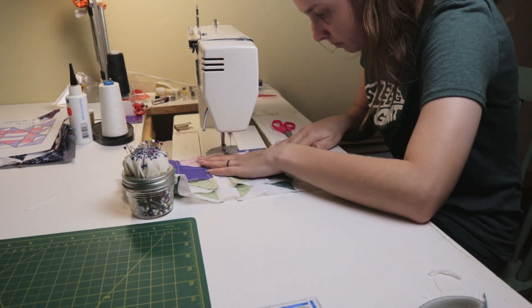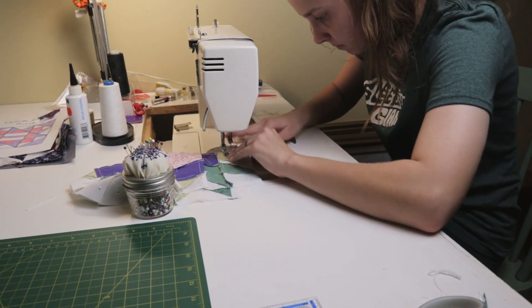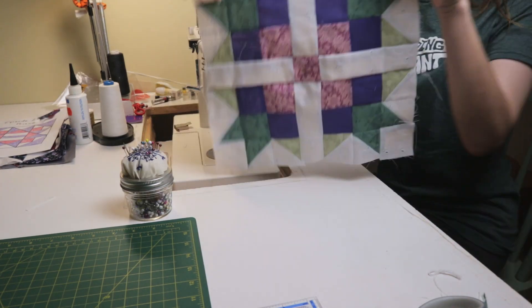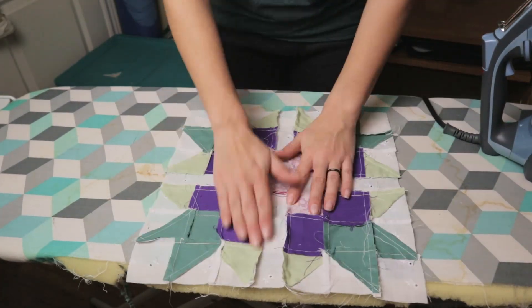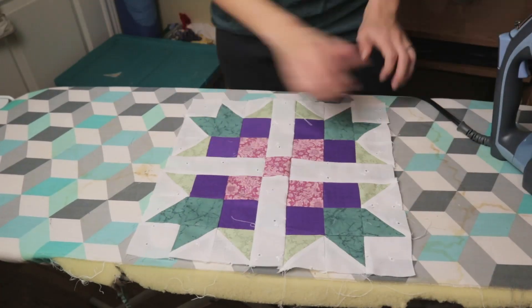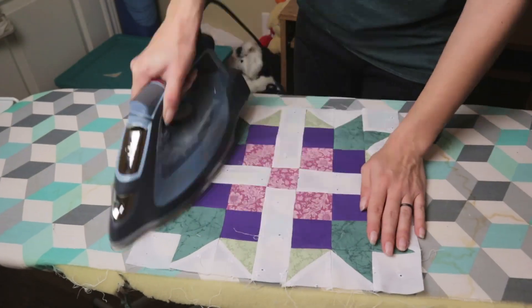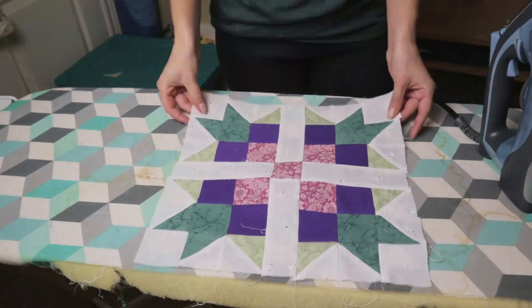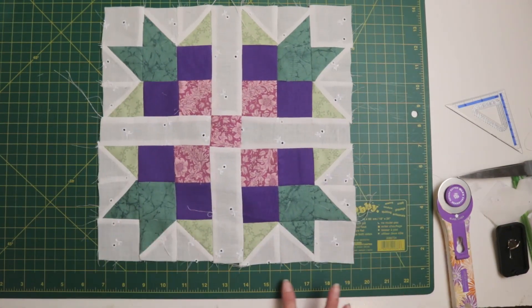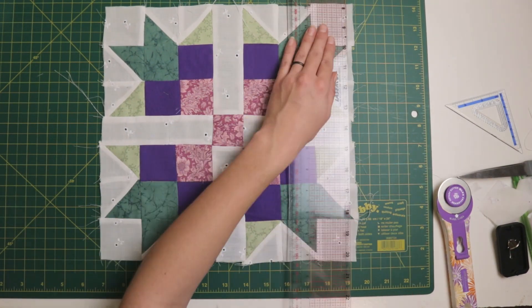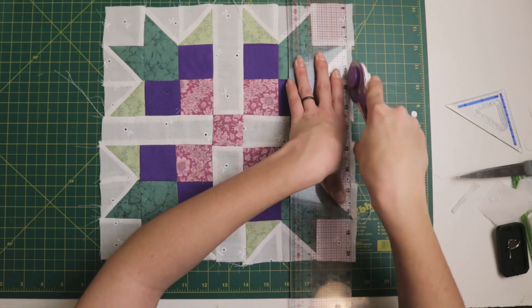With all this sewing done, all that was left was a final press and a trim. I pressed those last seams that I had sewn towards the middle of the block and just gave the rest of the block a good once over. I trimmed down the edges of the block to bring it to an even 12 inches, and she's done!